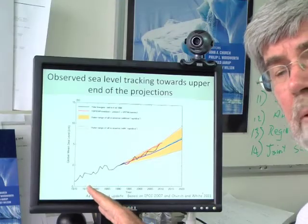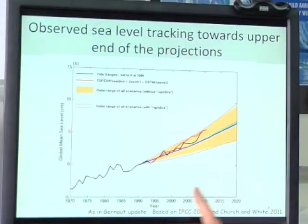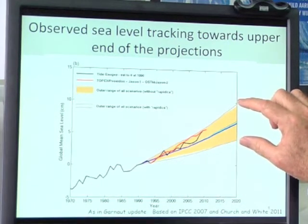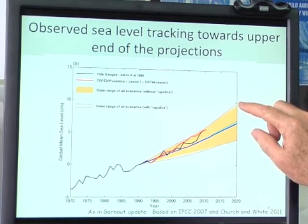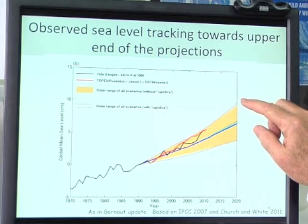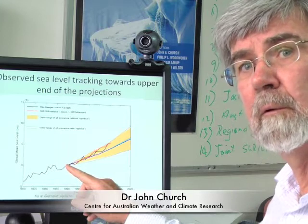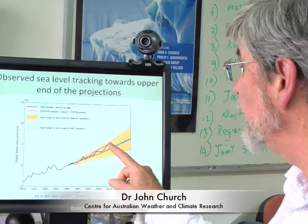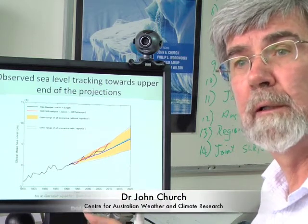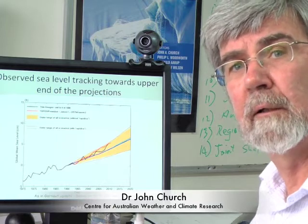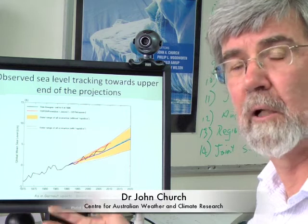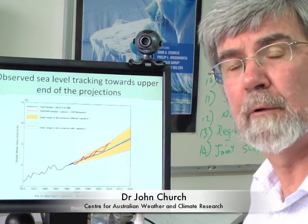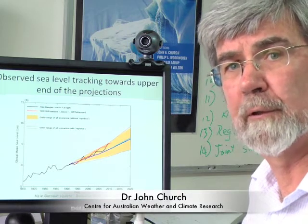This is now comparing the projections with the observations going from 1970 to 2020. The band here is the same band as in the previous diagram, so the upper end of this band is the line that leads to sea level rise of 80 centimetres by 2100. The tide gauge observations start off equal to the projections in 1990, and the satellite measurements only started in 1993, but by 2010 both the in situ and the satellite observations are tracking close to the upper end of the projections. So there is a concern that maybe our current projections are underestimating what future sea level rise could be.